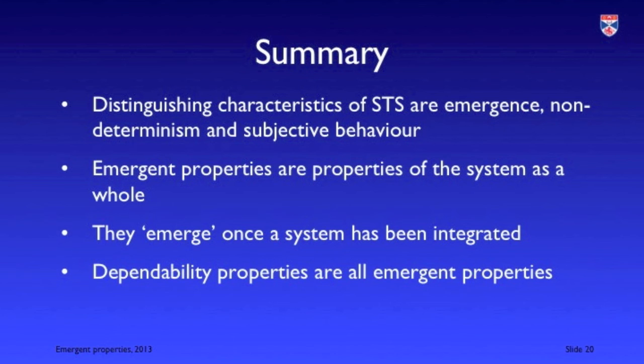Three particularly important characteristics of socio-technical systems are emergence, non-determinism, and subjective behaviour. Emergent properties are properties of the system as a whole and only become apparent once the system has been assembled from its components. The dependability properties — safety, security, reliability, and availability — are all emergent properties, and so we cannot accurately predict them in advance.